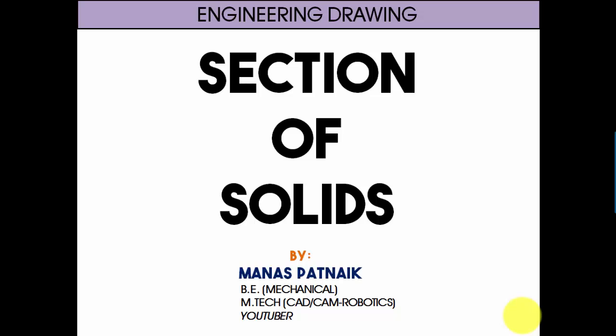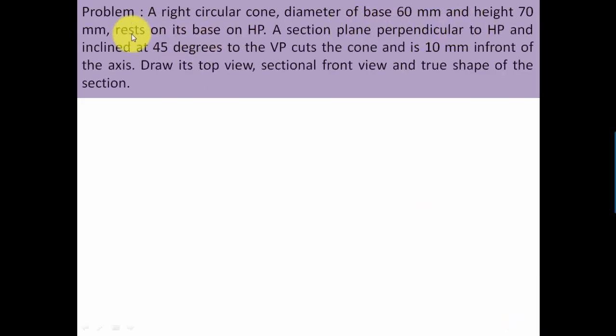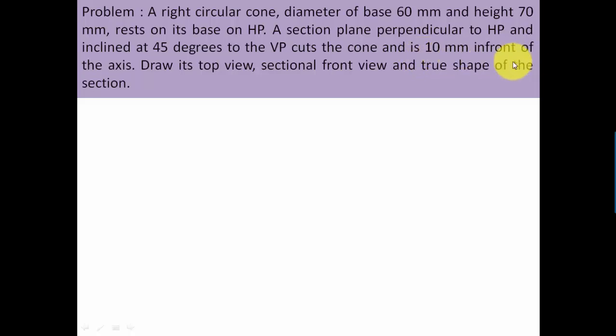Hi there guys, this is your friend and tutor Manus, and today I'll be continuing with my discussion on section of solids. Here we go: a right circular cone, diameter of base 60 mm and height 70 mm, rests on its base on HP. A section plane perpendicular to HP and inclined at 45 degrees to the VP cuts the cone and is 10 mm in front of the axis. Draw its top view, sectional front view, and true shape of the section.